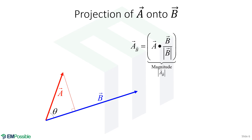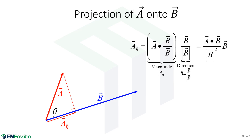That projection also has a direction — it is in the direction of B. Since we don't want the magnitude of B to pollute the direction, we use the unit vector again: B divided by its magnitude. Combining magnitude and direction, the full projection of A onto B is A dot B, divided by the magnitude of B squared, times vector B. We divide by magnitude B squared so that the magnitude of B does not pollute the calculation.